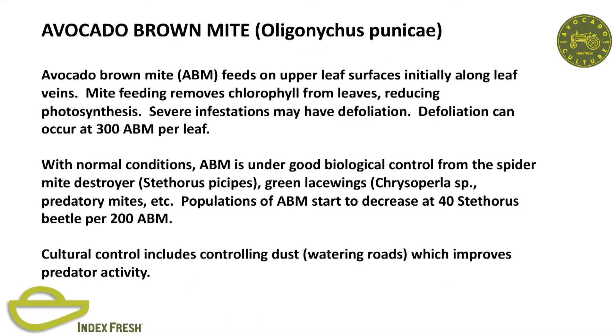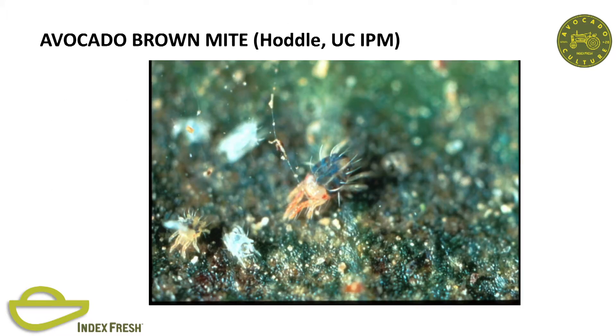Brown mite feeds on the upper leaf surfaces, removes chlorophyll, and defoliation can occur—normally under good biological control. In the literature I found that avocado brown mite starts to decrease if you've got 40 stethorus beetles per 200 mites. Sometimes we can't wait that long—this beetle is slow to move in. Cultural control includes controlling dust. I had to treat for avocado brown mite this year—the only other time I had treated was when a grower had used malathion back in the 80s. In December we had 70 mile-an-hour winds moving dust around, and the two orchards I had to treat were directly downwind or right next to the path of the Thomas fire, with lots of ash on the trees too—I had the most avocado brown mite I had seen in a long time.